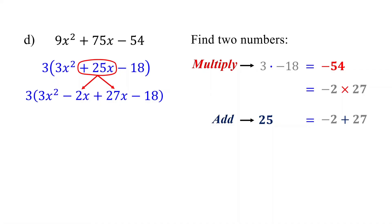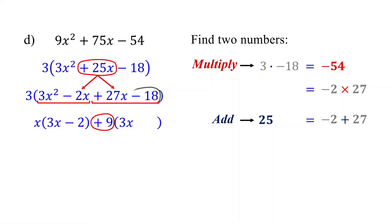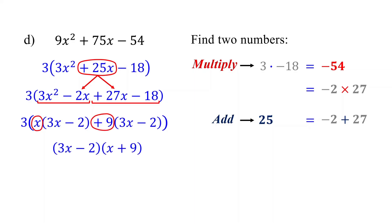Now factor the expression in the parentheses by grouping. Group the first two terms together and the last two terms together, then factor out the greatest common factor from each group. In the first group, the GCF is x. Divide each term by x: 3x squared divided by x is 3x, and negative 2x divided by x is negative 2. In the second group, the GCF is 9. Divide each term by 9: 27x divided by 9 is 3x, and negative 18 divided by 9 is negative 2. Notice that the factors inside the parentheses are the same for both groups, indicating you are on the right track. Do not forget the 3. Factor out the common factor (3x minus 2) for both groups, which leaves behind (x plus 9) as the other factor, with 3 at the front. Therefore, this is the answer.